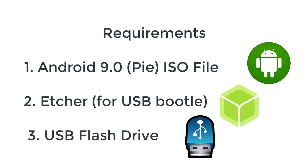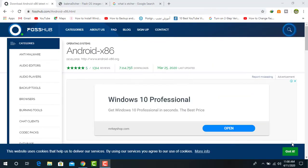In order to install this operating system on PC, the first thing we need to do is download the Android 9.0 ISO. And we also need to have a USB external drive for installing Android 9.0 on PC.